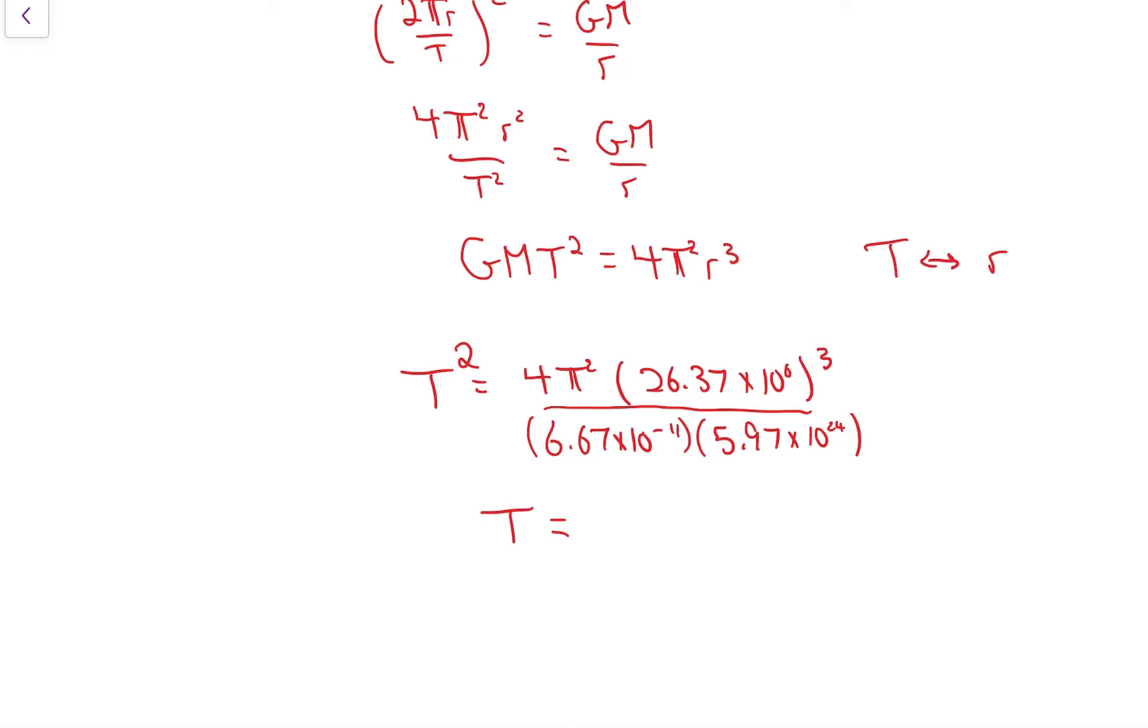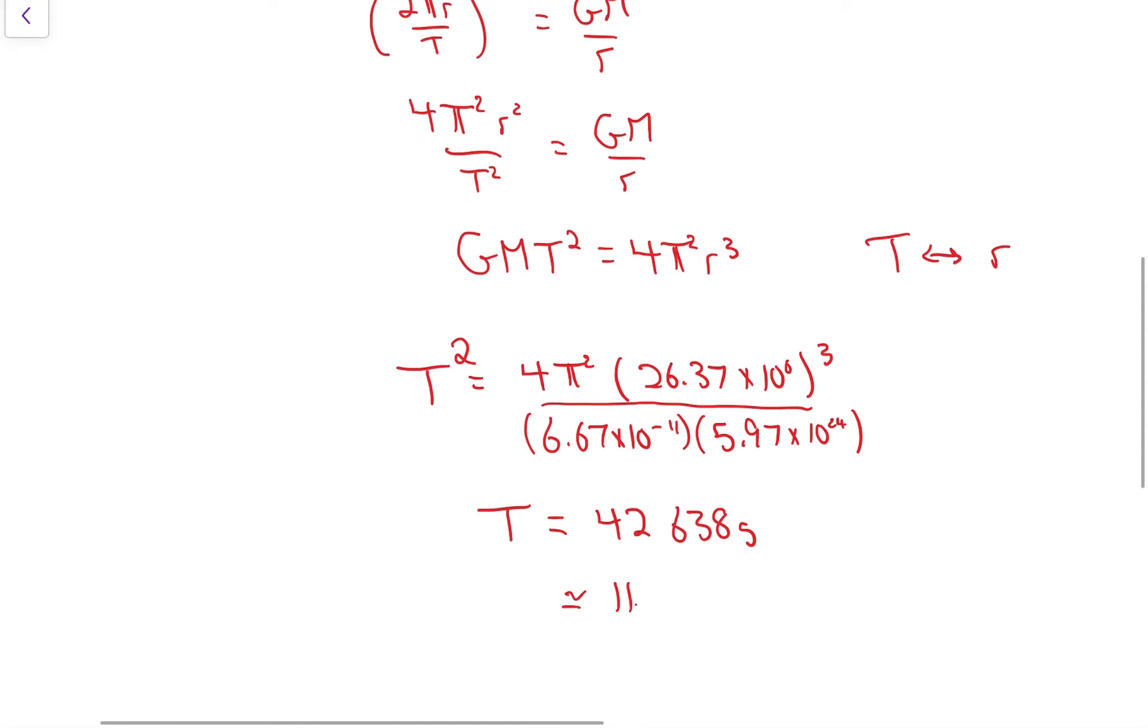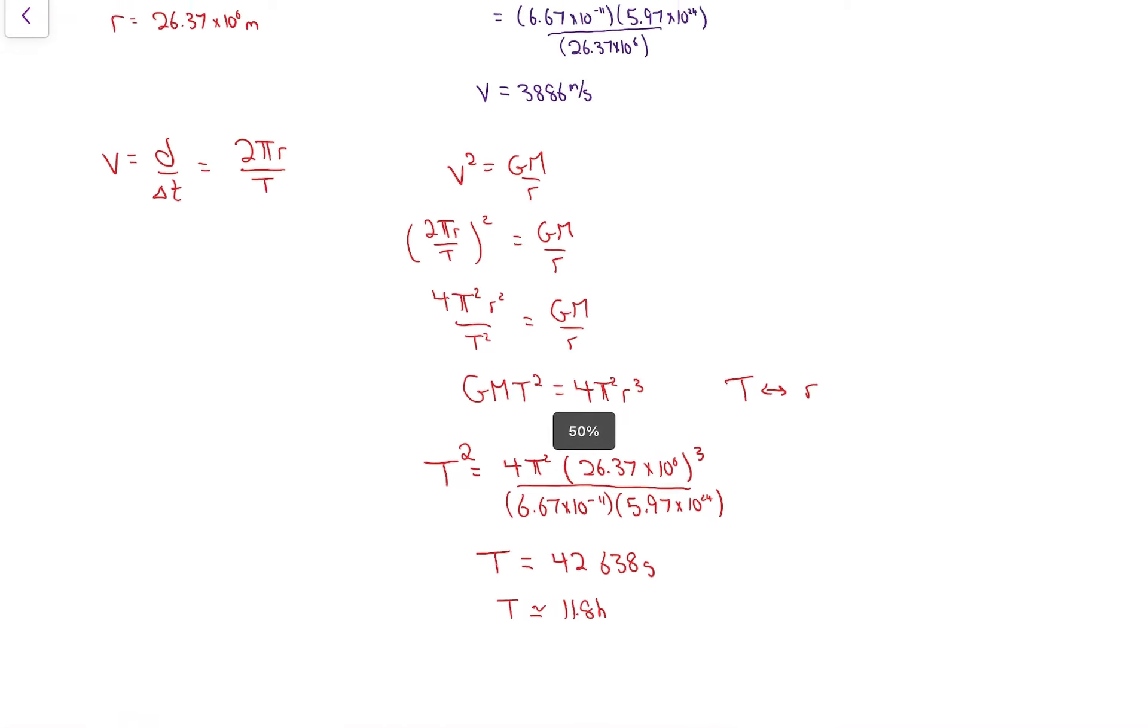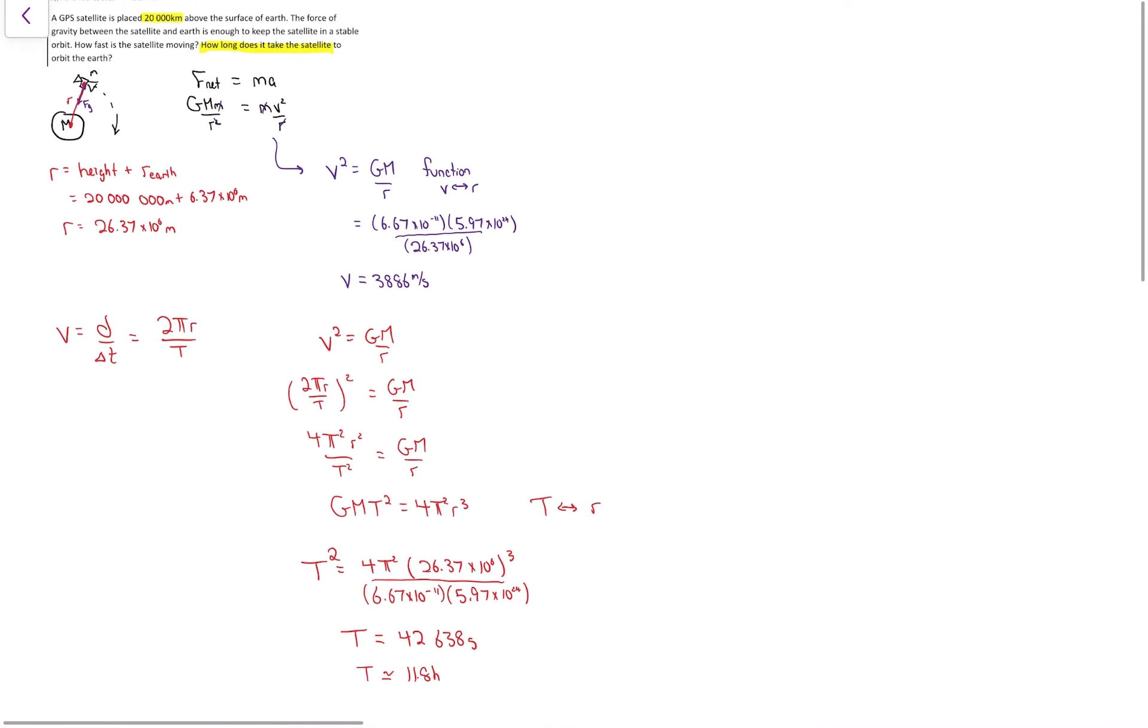At the end of all that, I get a time period of 42,638, give or take. If you round that off, that is almost 12 hours. So a GPS satellite is zipping around the Earth going almost 4,000 meters per second, and it takes roughly 12 hours for it to get around the Earth.